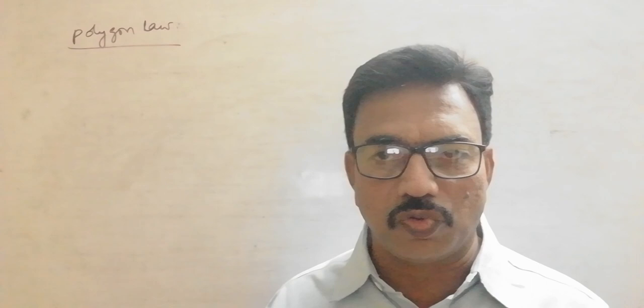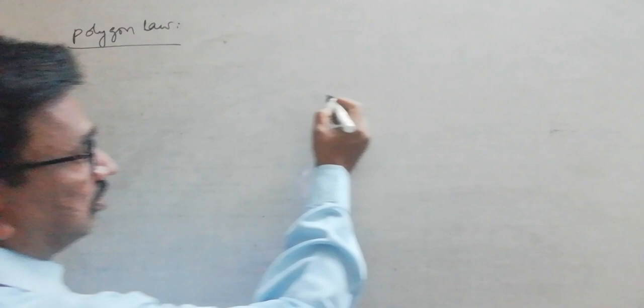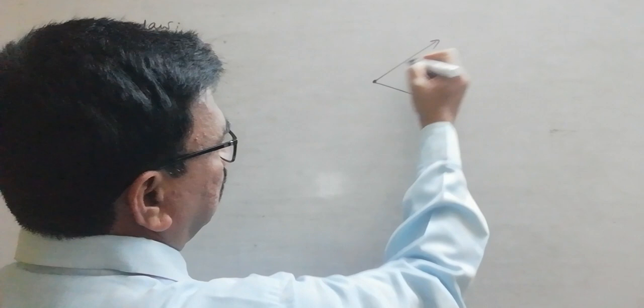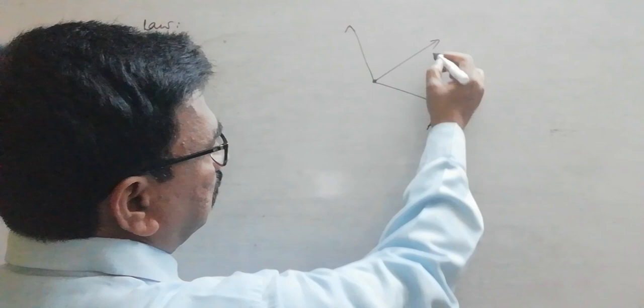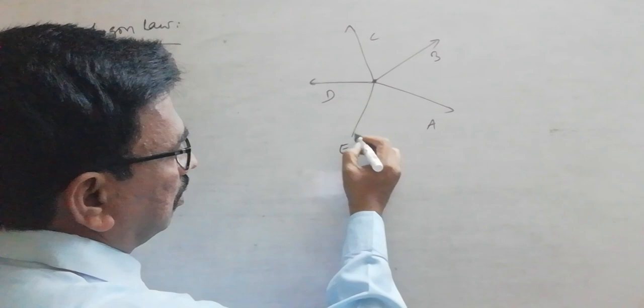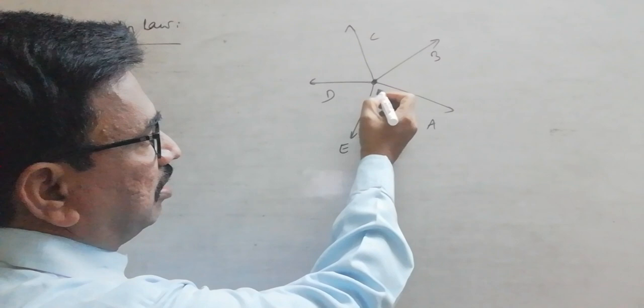But if the number of vectors is more than two, then we have to use polygon law. This polygon law is a graphical method where a set of vectors acting at a point simultaneously — may be like A, B, C, D, E — suppose these are the vectors acting simultaneously at this point O.